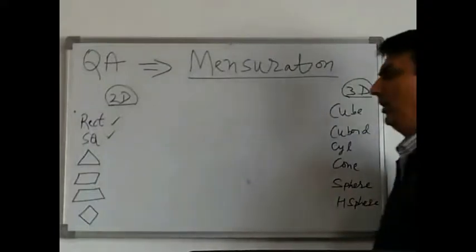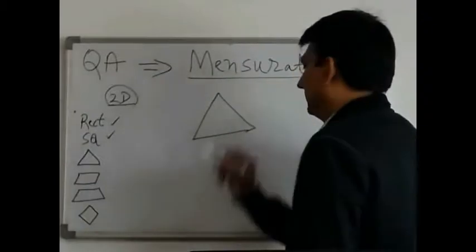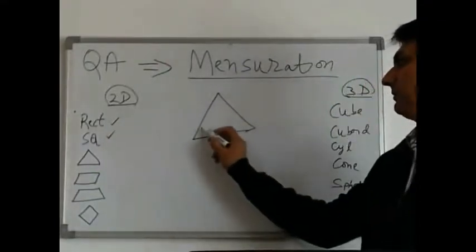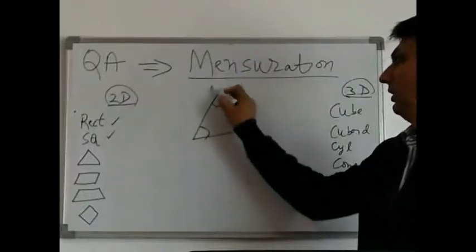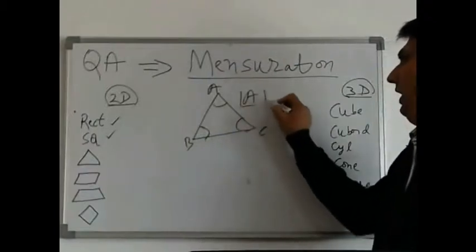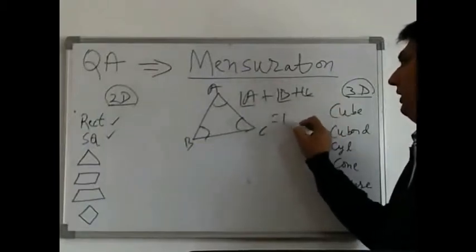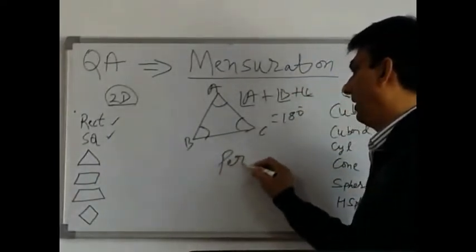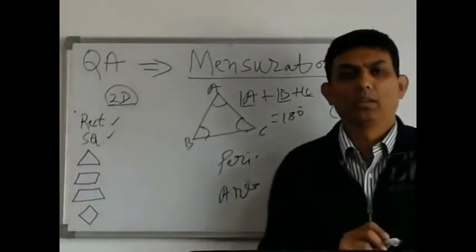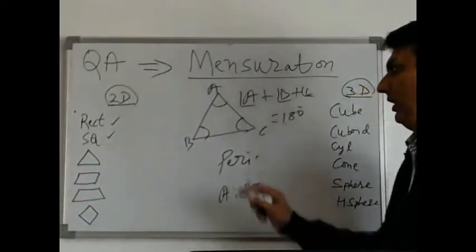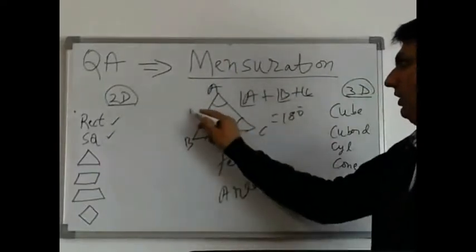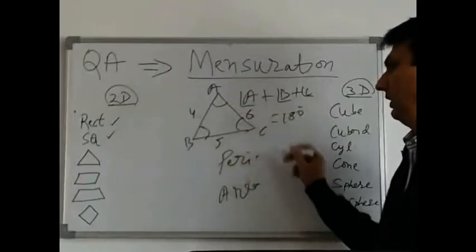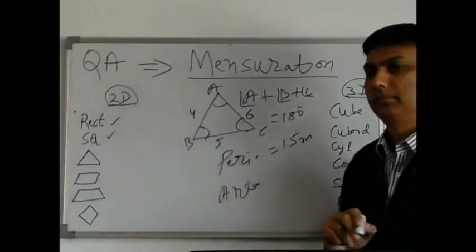Our third figure is a triangle, which is a three-sided figure. The basic rule in a triangle is that the sum of the three angles — angle A plus angle B plus angle C — will always be 180 degrees. Perimeter is simply the sum of the lengths of the three sides. So if the sides are 4 meters, 5 meters, and 6 meters, the perimeter of this triangle will be 4 plus 5 plus 6, that is 15 meters.